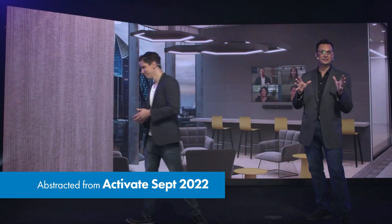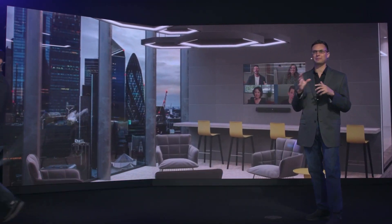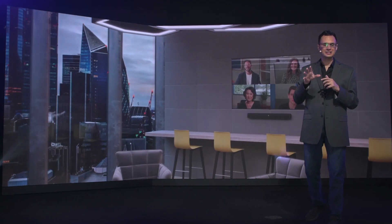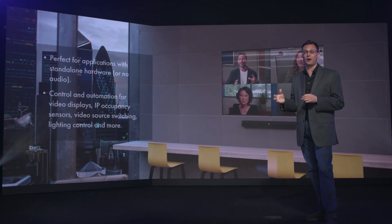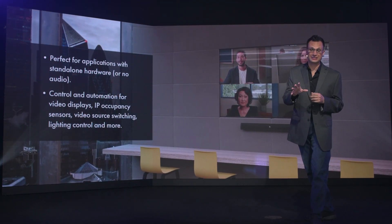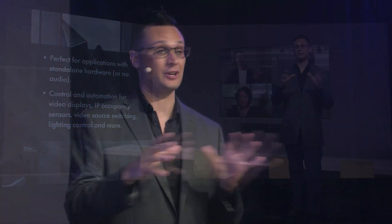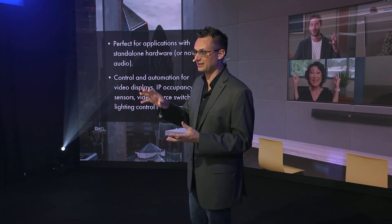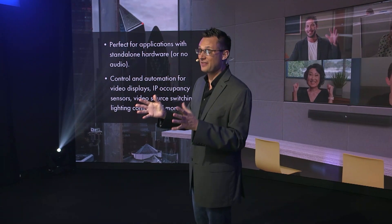So where does this go? This is perfect for those less complex huddle spaces — a space that might already have all of its audio and video requirements met by some other solution. Maybe it's got an audio soundbar or something like that. You don't need to add any more audio and video on the Q-SYS side, but you do need some control in that room. A lot of our research has shown us that one of the number one complaints people have in these rooms is you can't control the displays when you've got this smaller system that's just running a smaller huddle room.